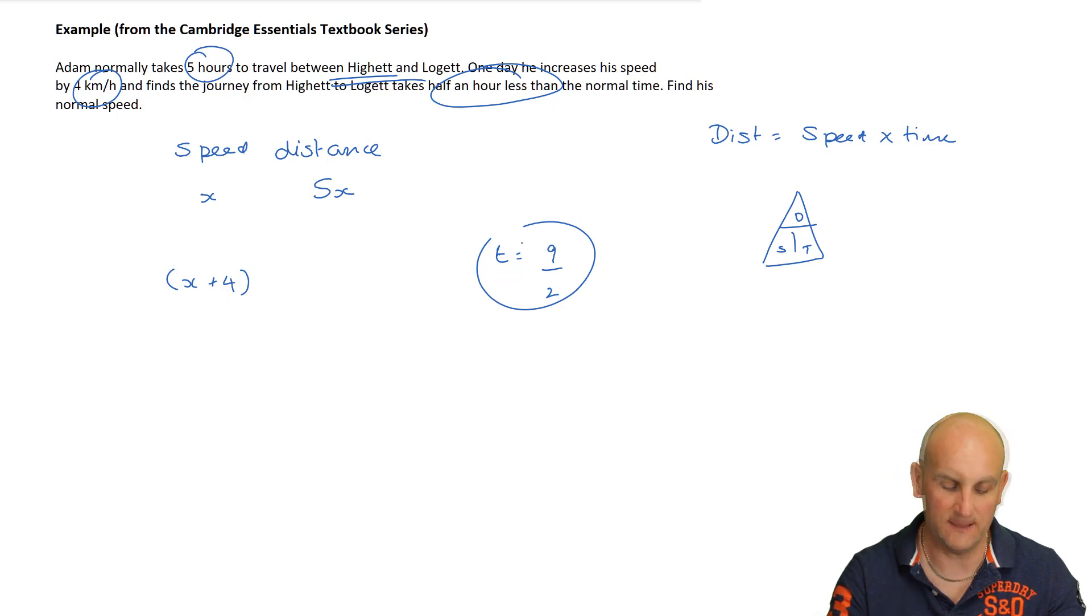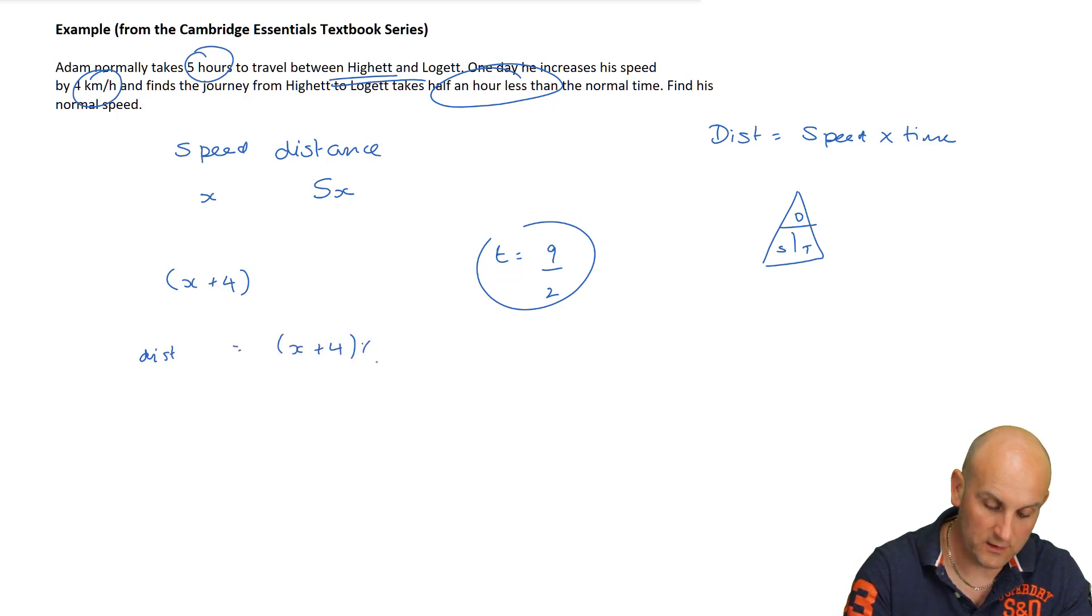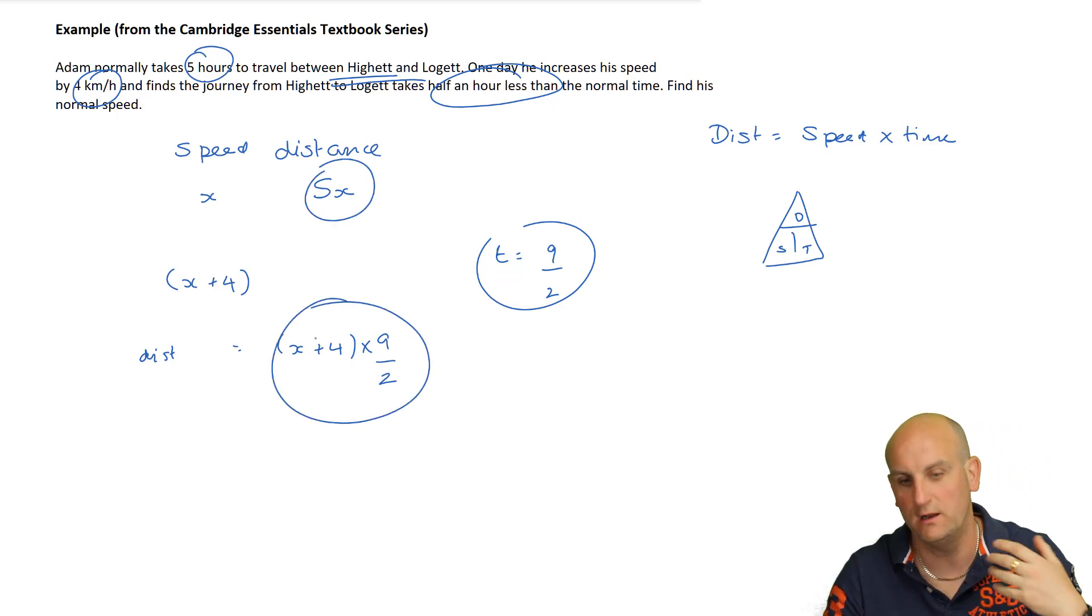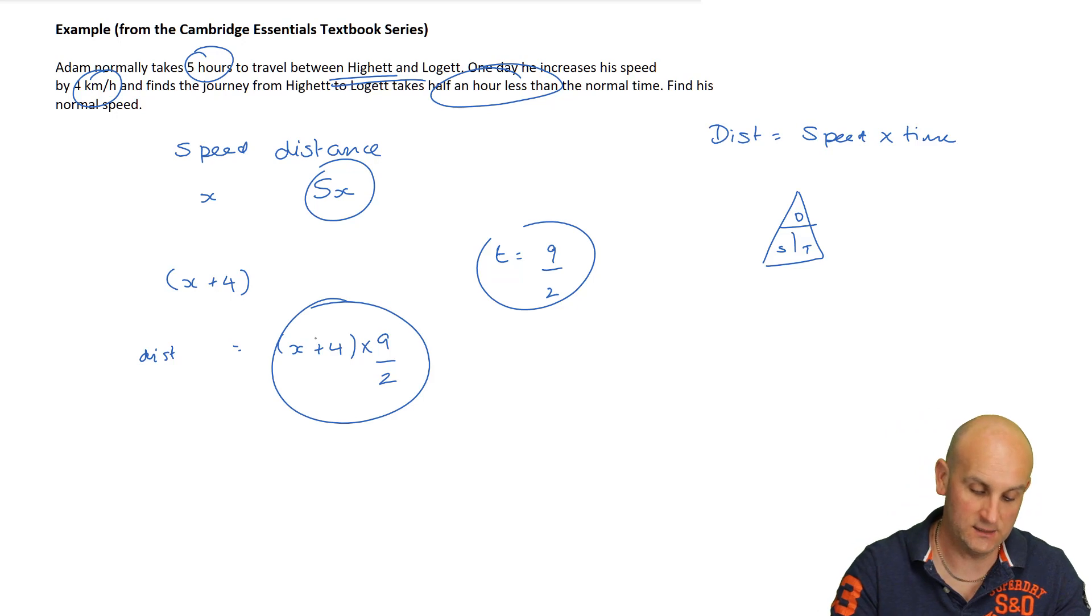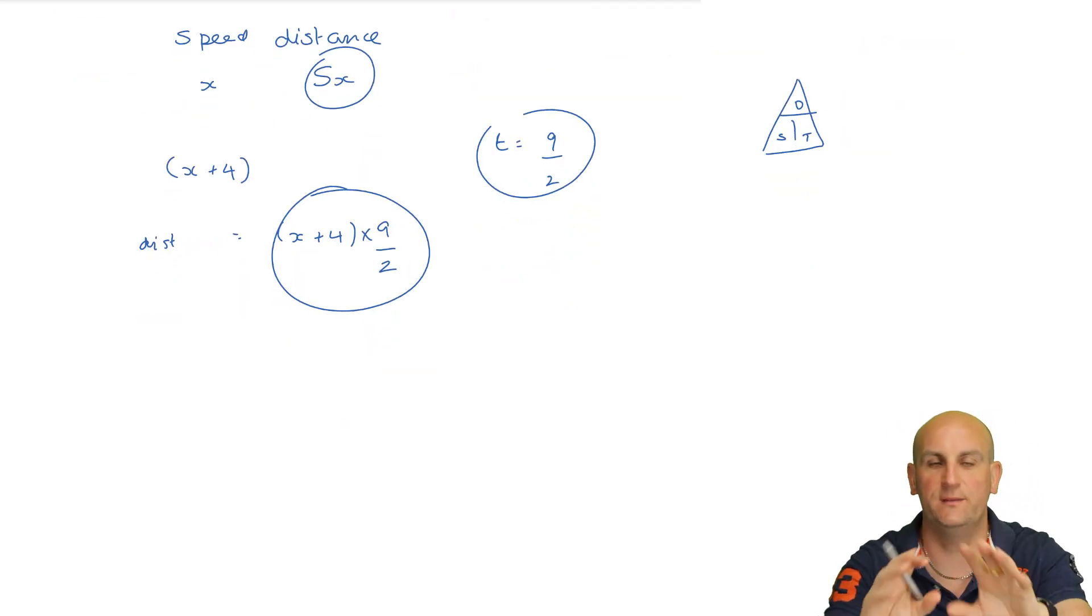How's that helping us? Remember, we're trying to work out that the distance for each of these journeys was the same. I've got a speed, I've got a time. How do I find out a distance? Multiply those together. So I now know the distance equals X plus 4 times 9 over 2. If I know the distances are the same, then I'm going to equate those two together and solve them.